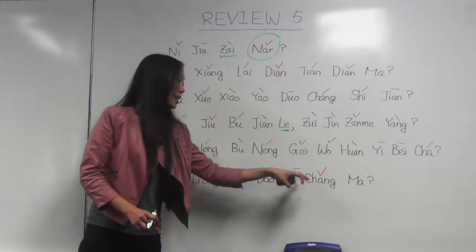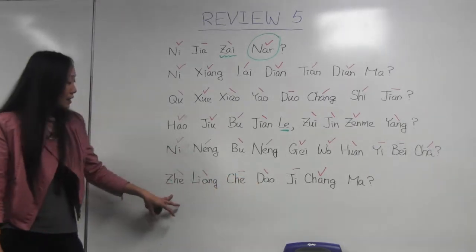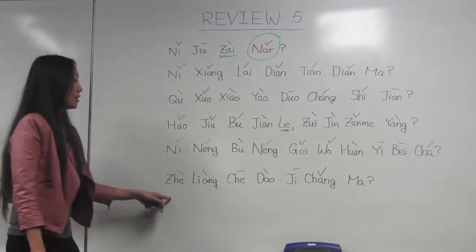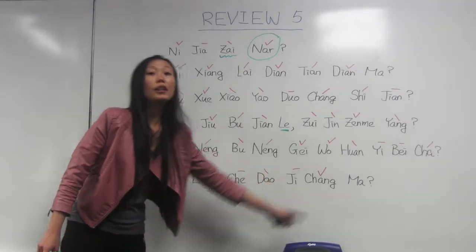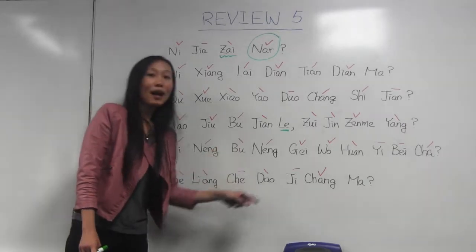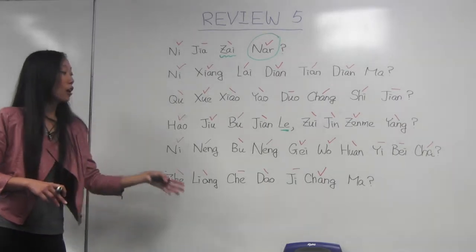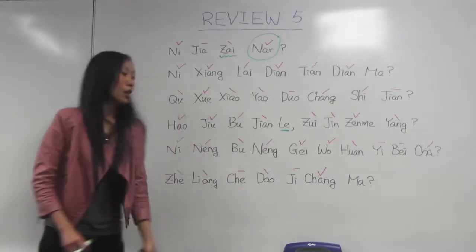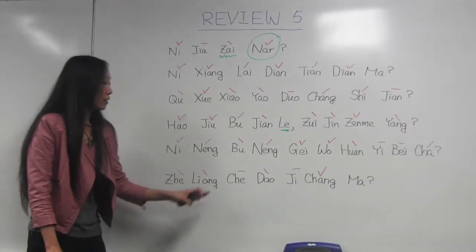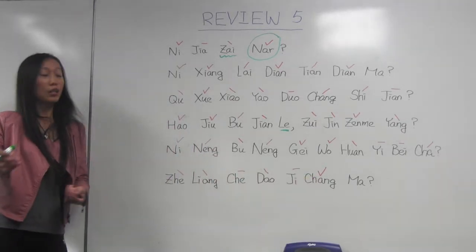这辆车到机场吗? 机场 means airport. 到 means arrive. 辆 is the measuring word for car. So: this car arrived at the airport. 这辆车到机场吗? Or if we want to ask 'is this car going to the airport,' we change 到 to 去: 这辆车去机场吗? — meaning: is this car going to the airport?